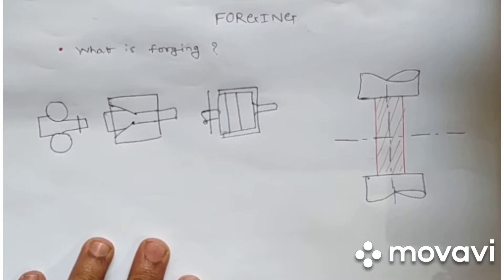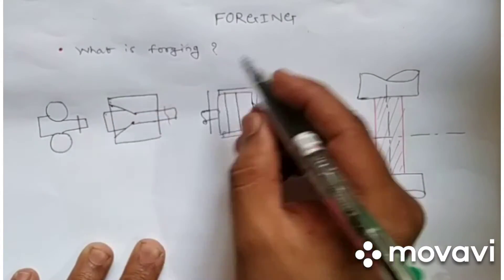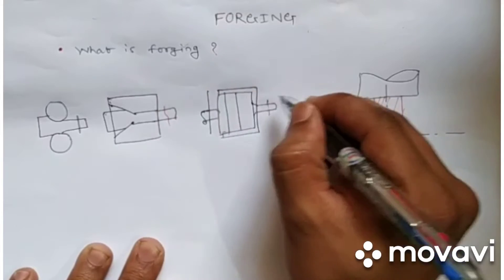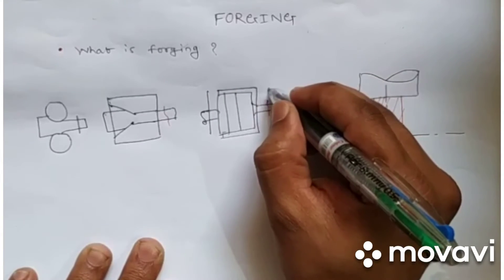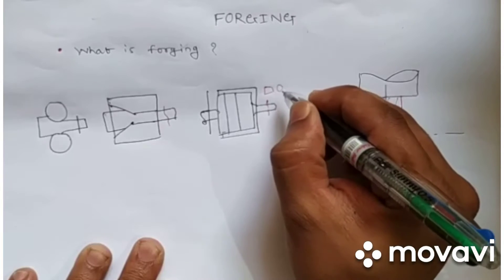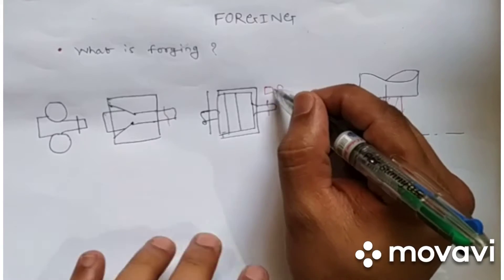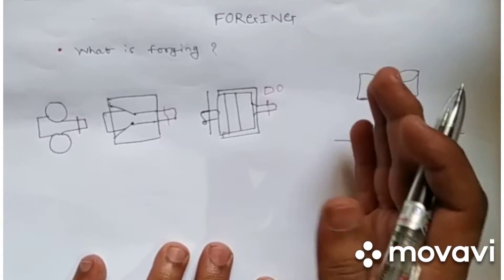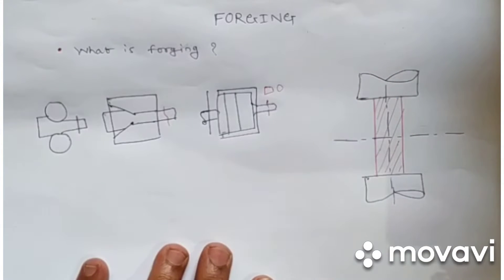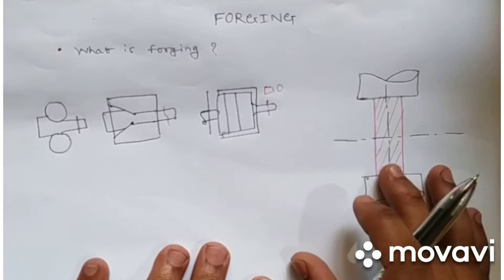In all these processes, we are getting a uniform cross-section of the material — we cannot vary the cross-section of the material we are getting. The section can be square, circular, or whatever shape according to the die, but the section is uniform throughout its length. We cannot vary this section, so this is the main limitation of all these processes.